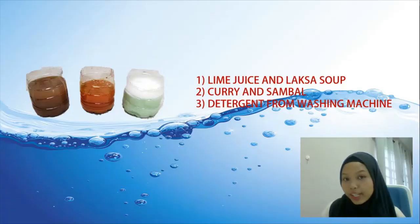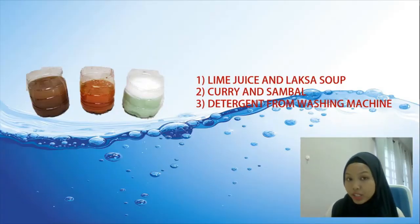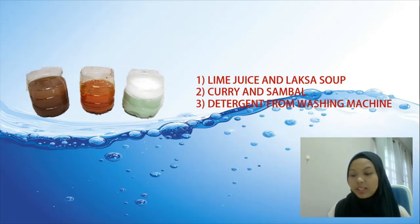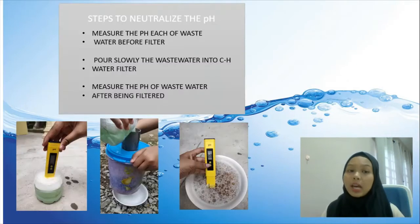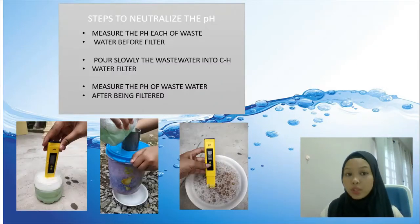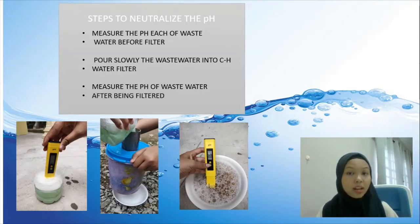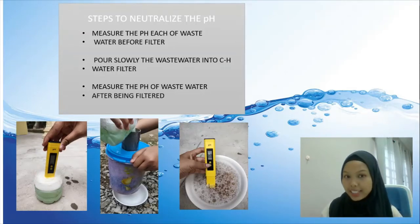After the water filter has been set up, prepare 3 tubs of wastewater. I prepared lime juice and laksa soup, curry and sambal, and detergent water from a washing machine. The next step is to measure the pH of each wastewater sample before filtering. Then, pour the wastewater slowly into the CH water filter and measure the pH of the wastewater after being filtered.